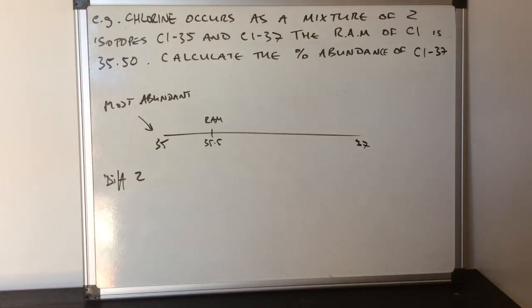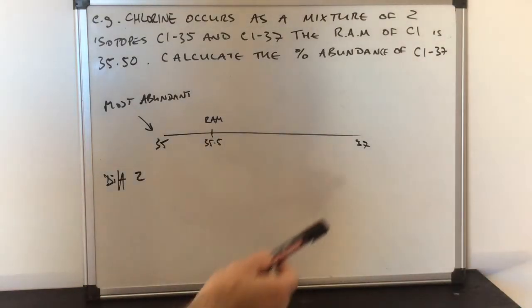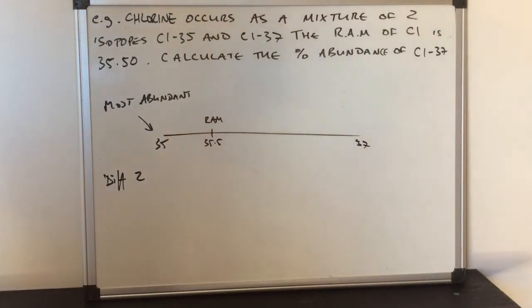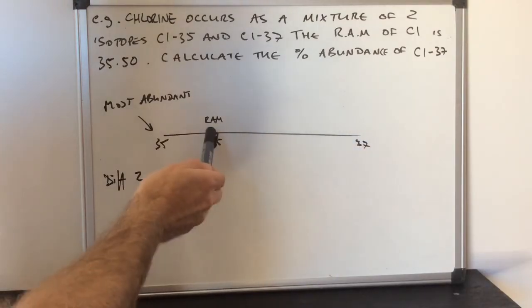The 35 is the more abundant isotope. We need to work out the percentage abundance of this one with the smallest pull. The 35 pull is all of that coming from here to there.